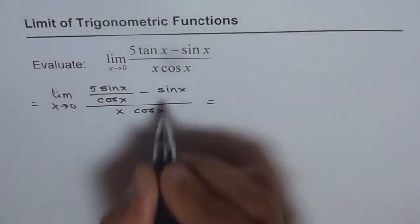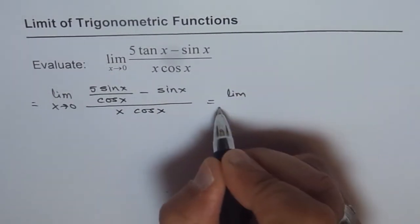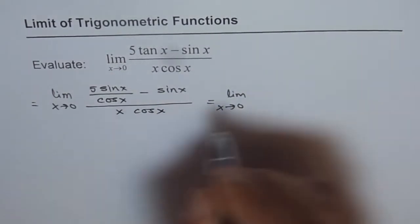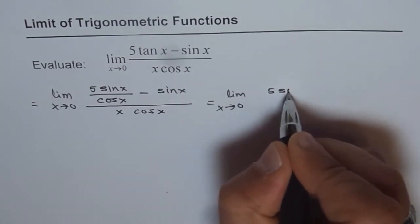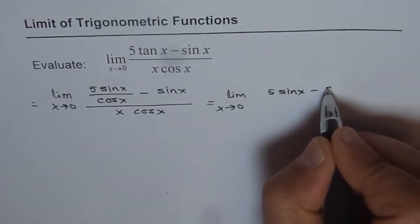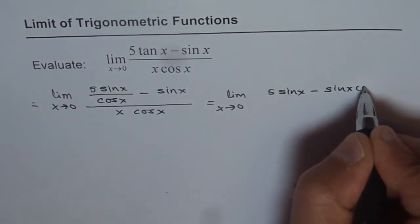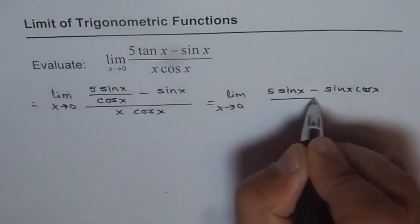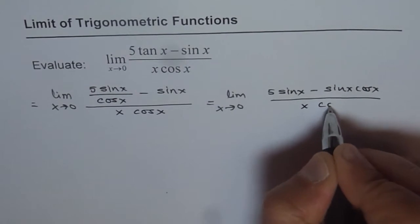Now we will take common denominator and say limit x approaches 0. So we have (5 sin x - sin x cos x) over (x cos x).